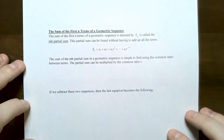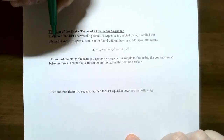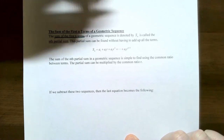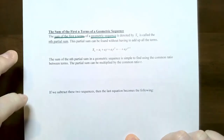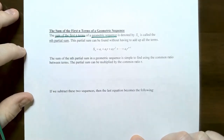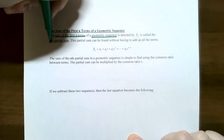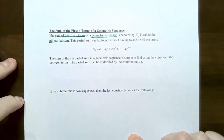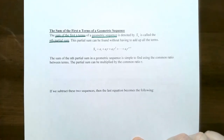Let's look at the sum of the first n terms of a geometric sequence. The sum of the first n terms, if your sequence is geometric, is denoted capital S sub n. This has the same notation as the sums involving arithmetic sequences, and it's still called an nth partial sum. The partial sum is adding up the terms of a geometric sequence.